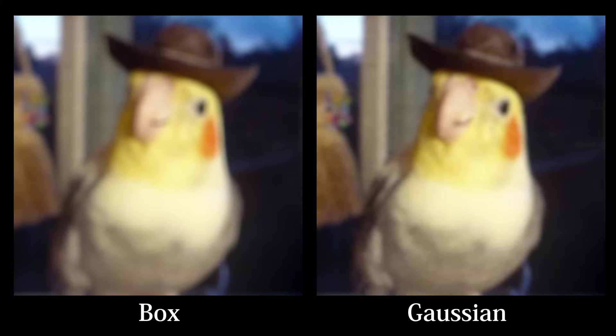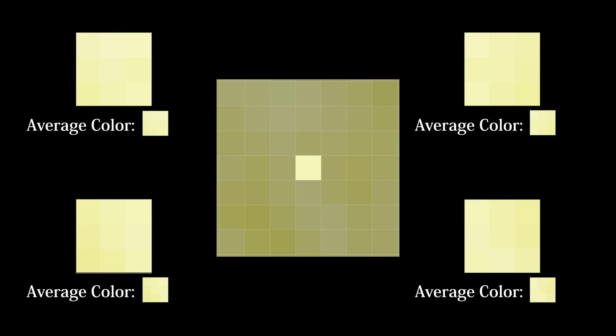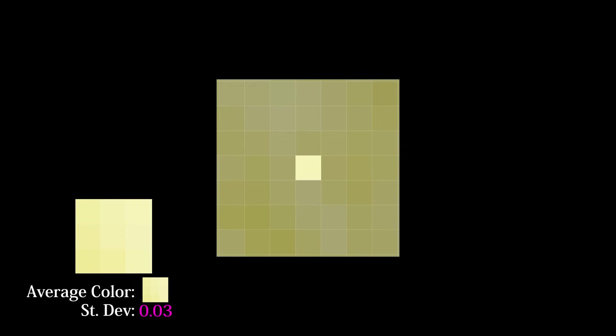Similar to the box and Gaussian blur, we will center a square over our pixel. Then, we divide this square into four sectors. For each sector, we will calculate the average color and the standard deviation. Lastly, we pick the sector with the lowest variance and set the center pixel to the average color of that sector.